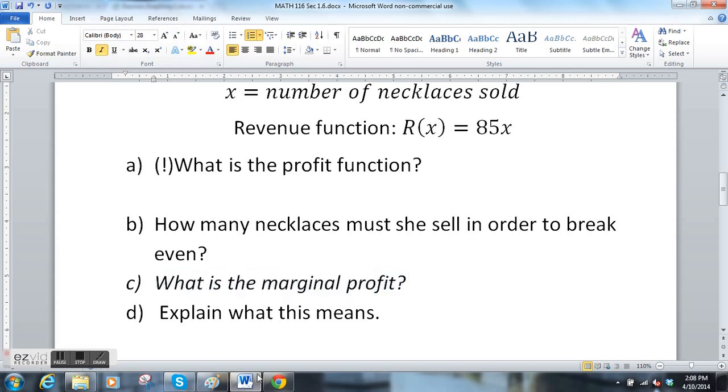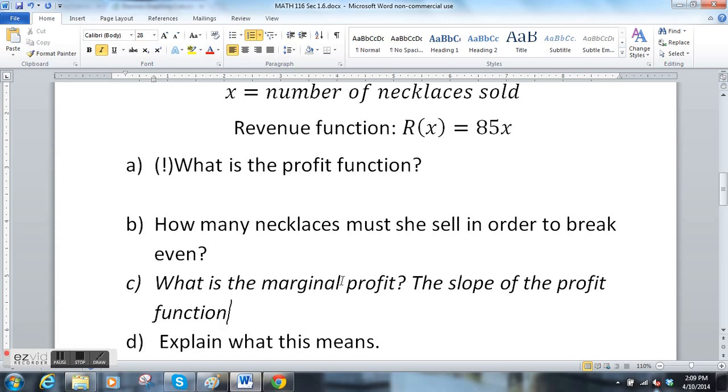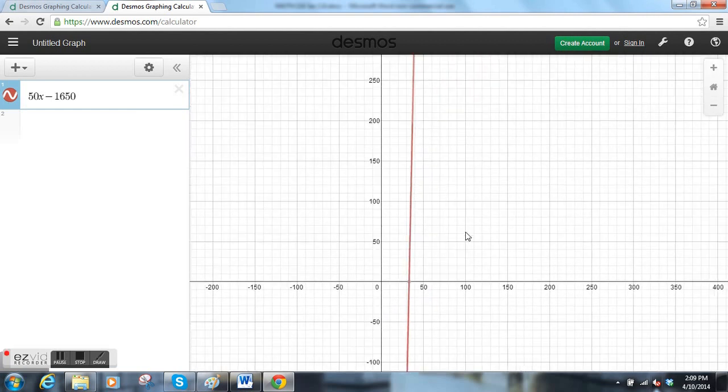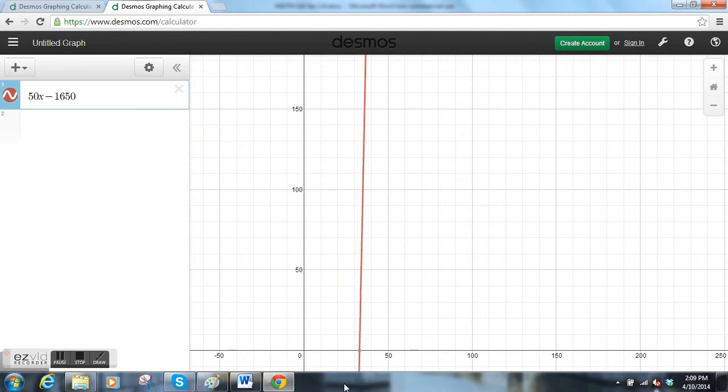The marginal profit is the slope of the profit function. From now on when you see the word marginal, I want you to think slope. Marginal means slope, and if you continue on to Math 148 that will help you out. The marginal profit is the slope of the profit function—how steeply are you making money, how fast is your profit growing?